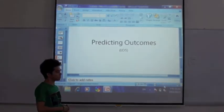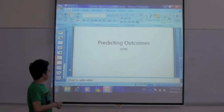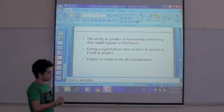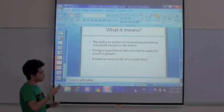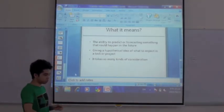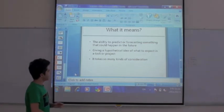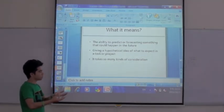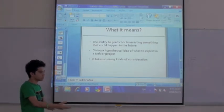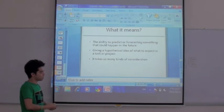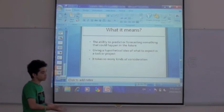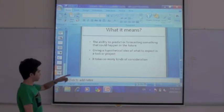Let's move on to the next outcome, which is predicting outcomes. Prediction is an ability to forecast something that could happen in the future. It also means that you give a hypothetical idea to what to expect as a result of your task or your project. Well, in prediction, it takes so many kinds of consideration, as prediction may not be true most of the times.